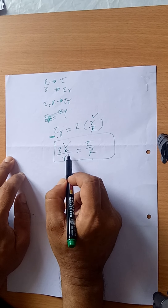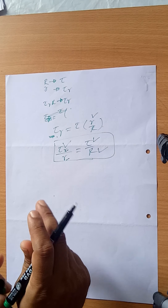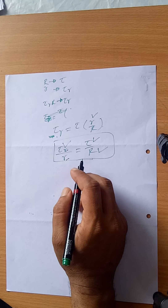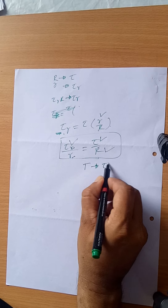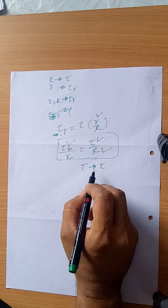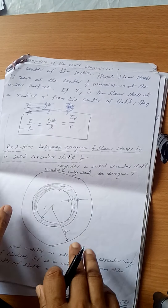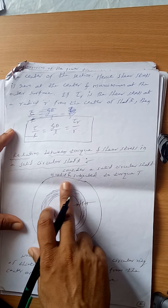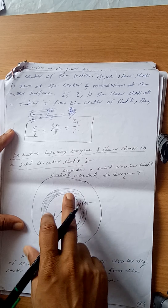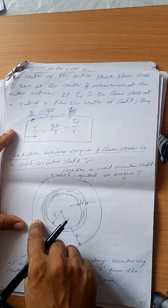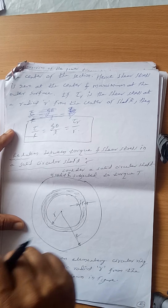So this is the shear stress at radius r. Now I want to establish the relationship between applied torque and the shear stress induced in the material. I have taken a solid cylinder of radius R. Let us consider a circular elemental ring of thickness dr at radius r.